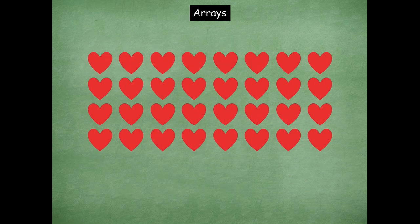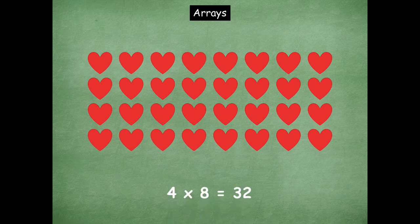Oh, I love this one. So friends, how many rows are there in this array? Four. Awesome. How many are in each row? Eight. So our multiplication sentence is four times eight equals what friends? Thirty-two. Four times eight equals thirty-two — matches this array.